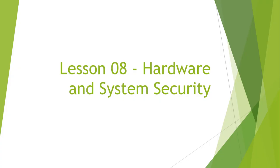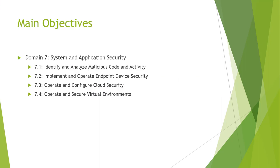Lesson 8: Hardware and System Security. We have four main objectives. We're focusing on Domain 7, System and Application Security. The four main objectives we're going to be working on are: Identify and Analyze Malicious Code and Activity, Implement and Operate Endpoint Device Security, Operate and Configure Cloud Security, and Operate and Secure Virtual Environments. Those are the four main focal points for this lecture.